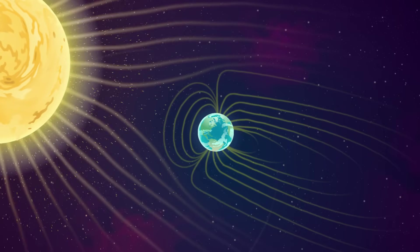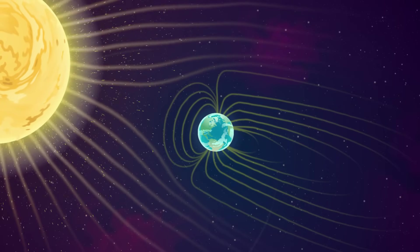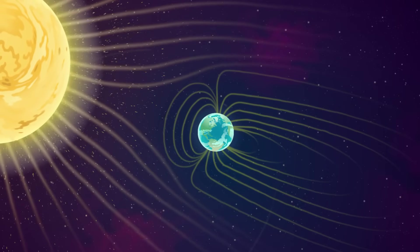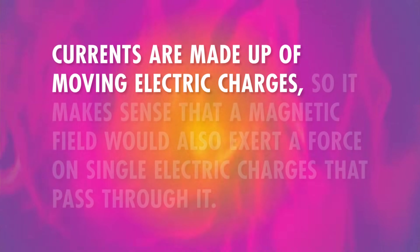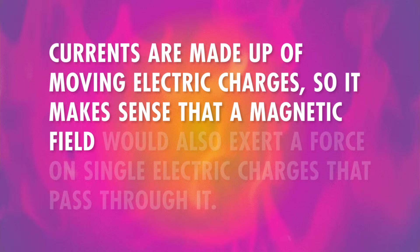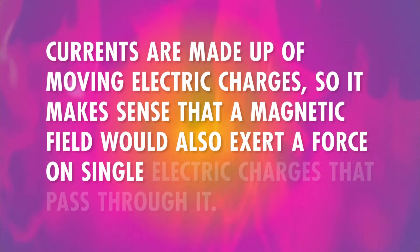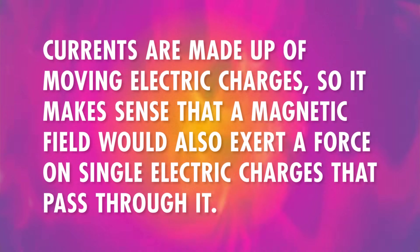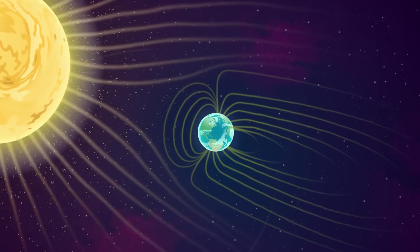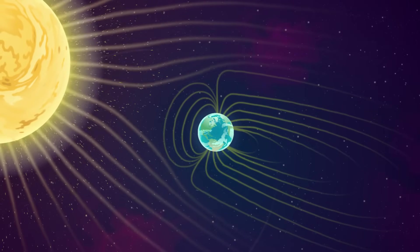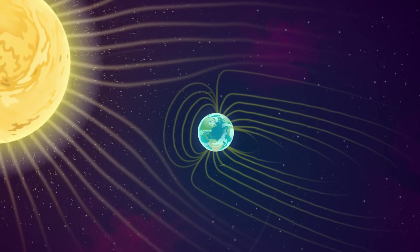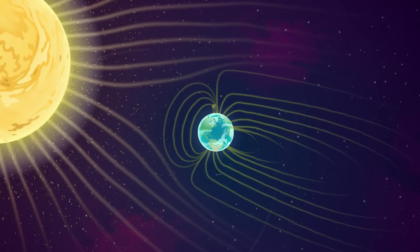All of this math helps us understand how we're being protected from solar radiation right now. The Sun constantly shoots radiation toward Earth in the form of charged particles. But luckily for us, Earth has a magnetic field. Currents are made up of moving electric charges, so it makes sense that a magnetic field would also exert a force on single electric charges passing through it. And this is exactly what Earth's magnetic field does to the charged particles coming from the Sun – it deflects them, sending them spiraling away and protecting us from the worst of the radiation.